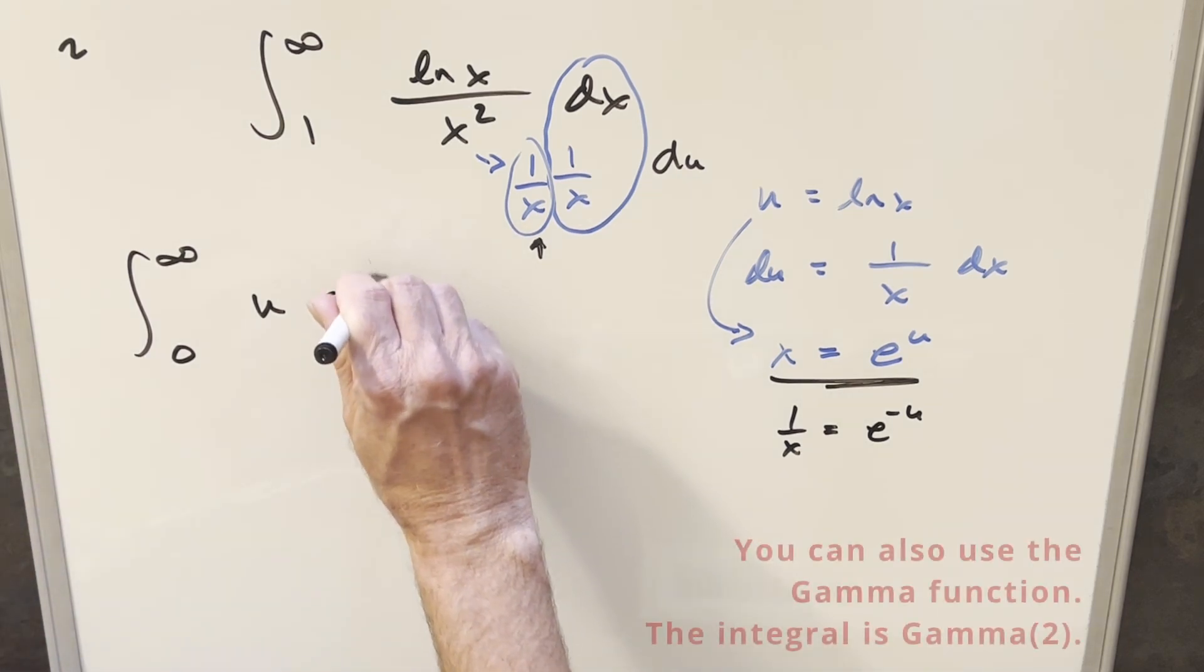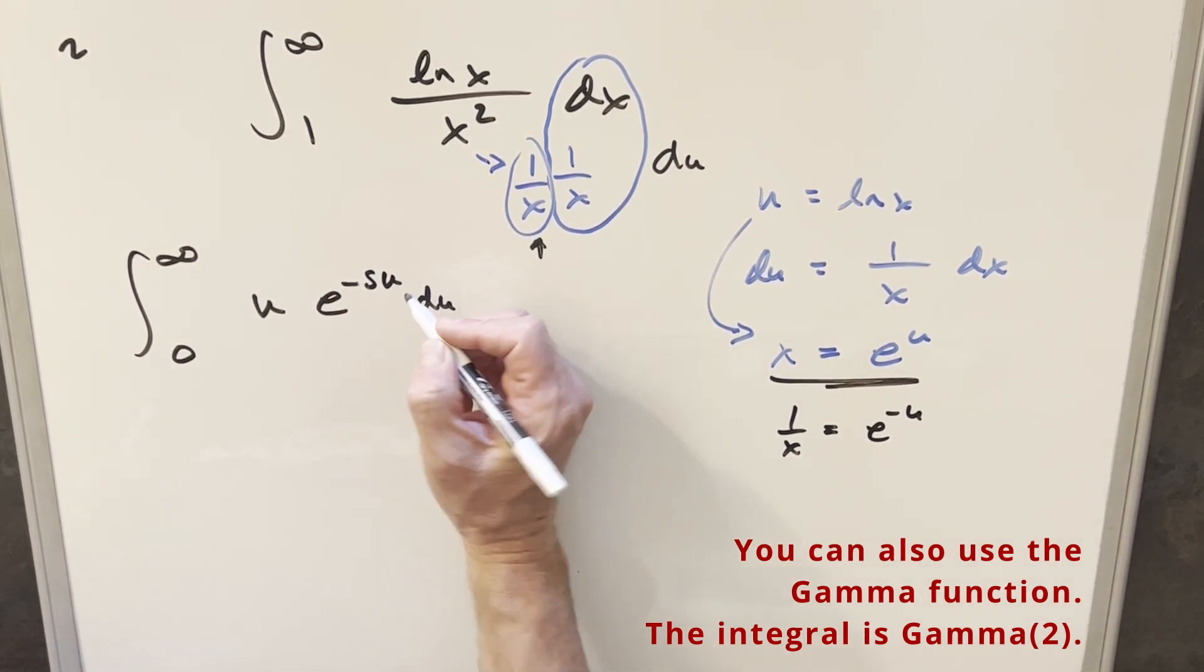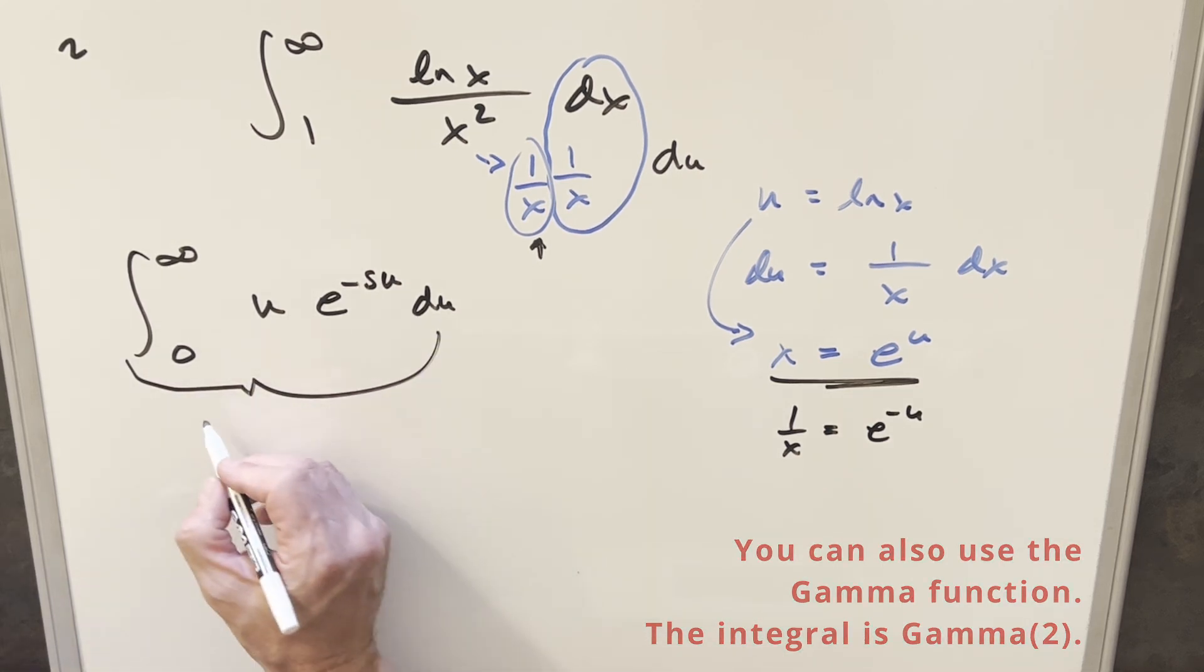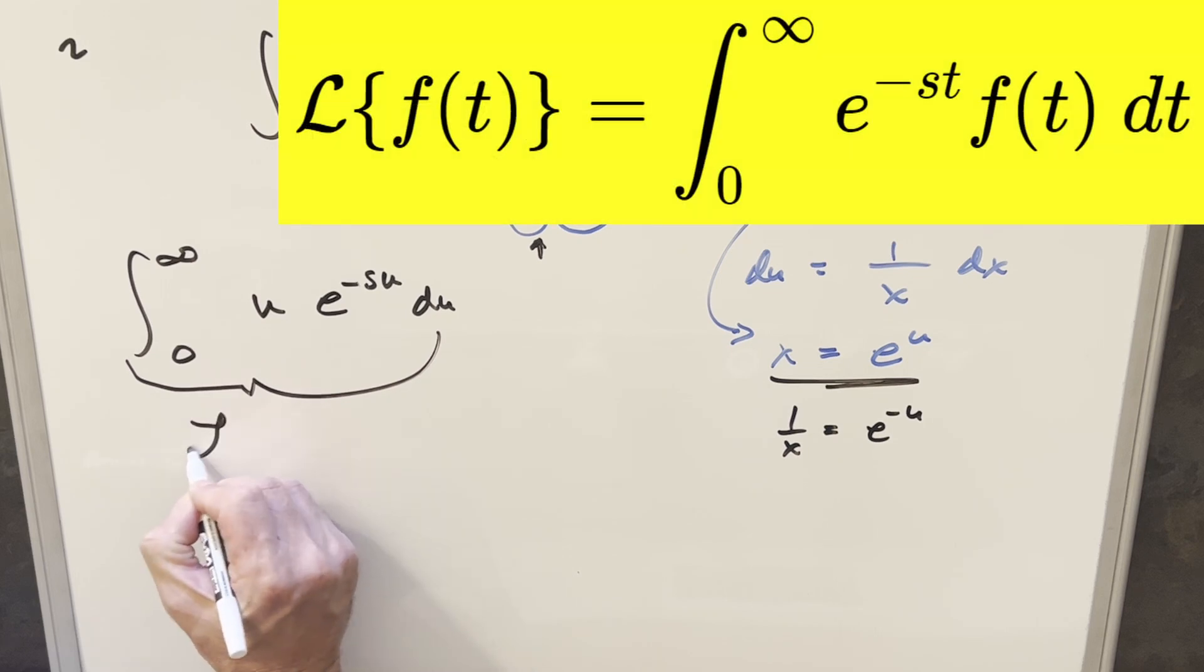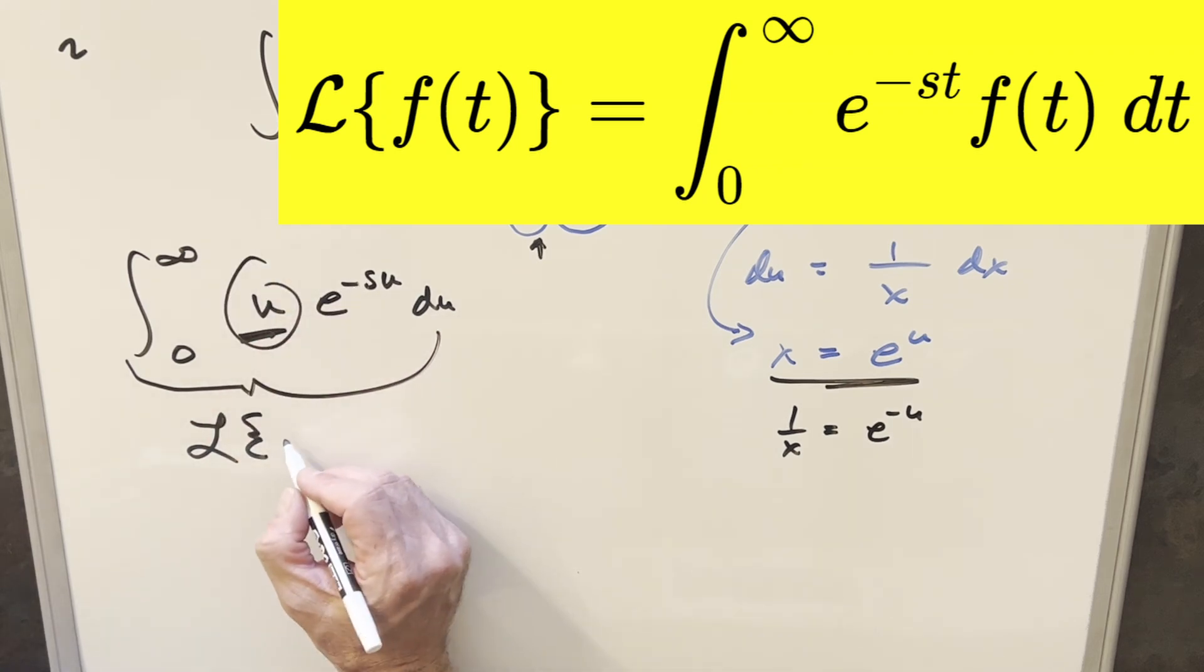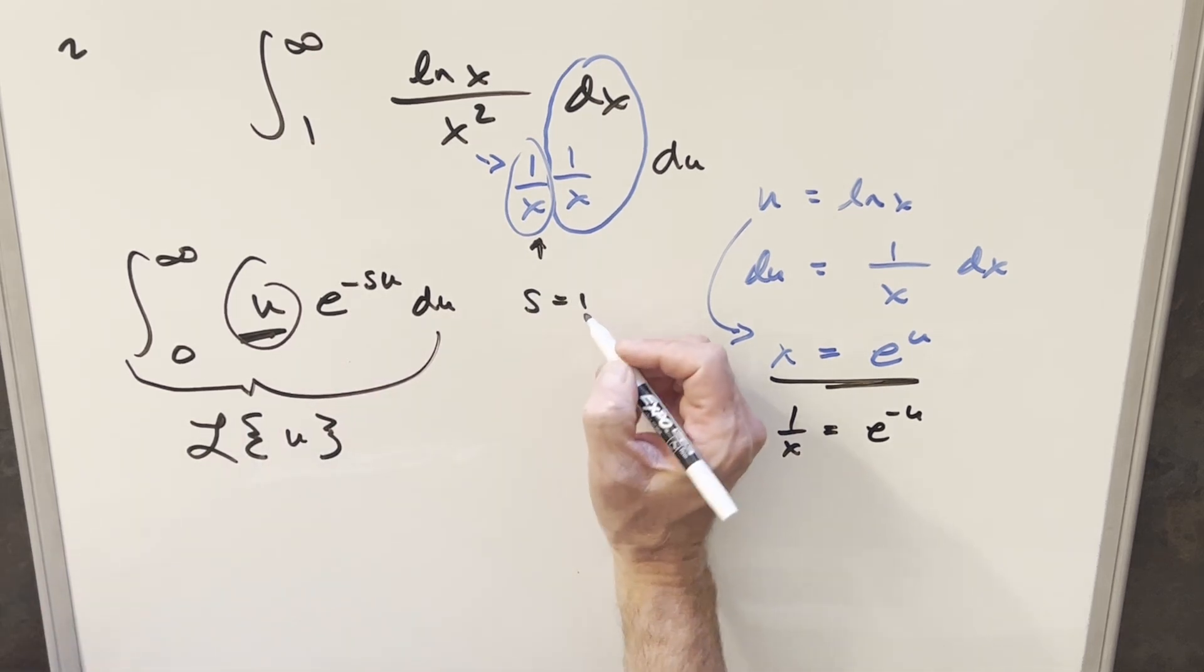But maybe as a slight shortcut, I could create a parameter here on the u and write this as e to the minus su. The thing you might notice is this is exactly set up for a Laplace transform. This is the Laplace transform of just u as our function. And everything else is just the... our function is just this u value right here. To do this without changing the problem, we're just going to say that s equals 1.